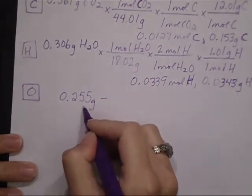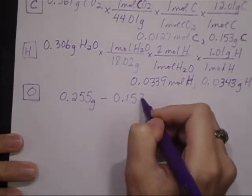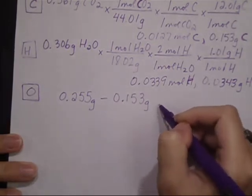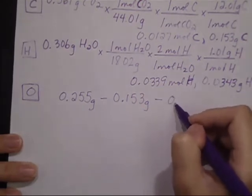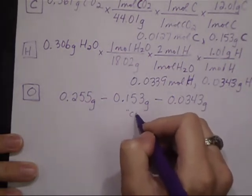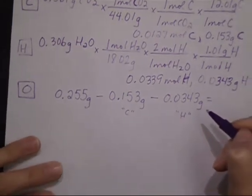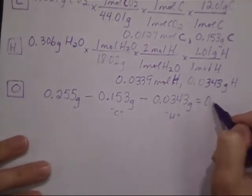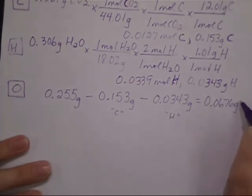So that's the original mass of the sample. We found that we used 0.153 grams of the carbon and 0.0343 grams of the hydrogen. That was the C, that was the H, so then I subtract the two of them and I get 0.0676 grams of oxygen.